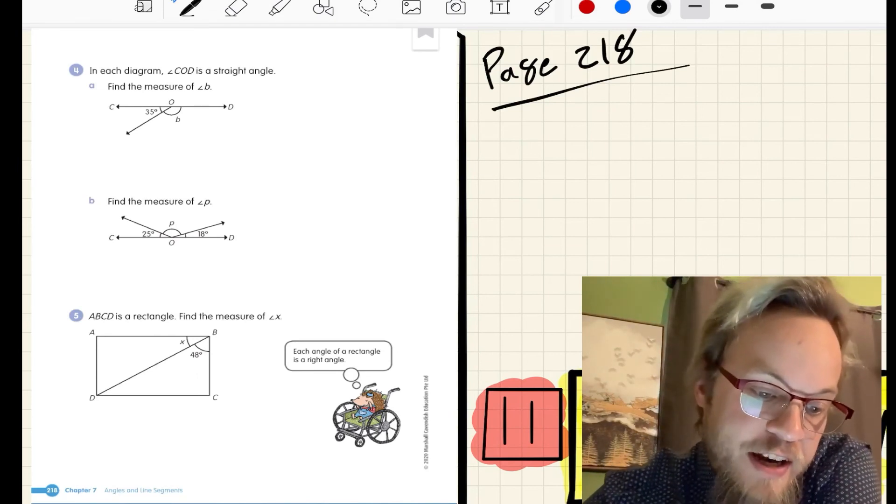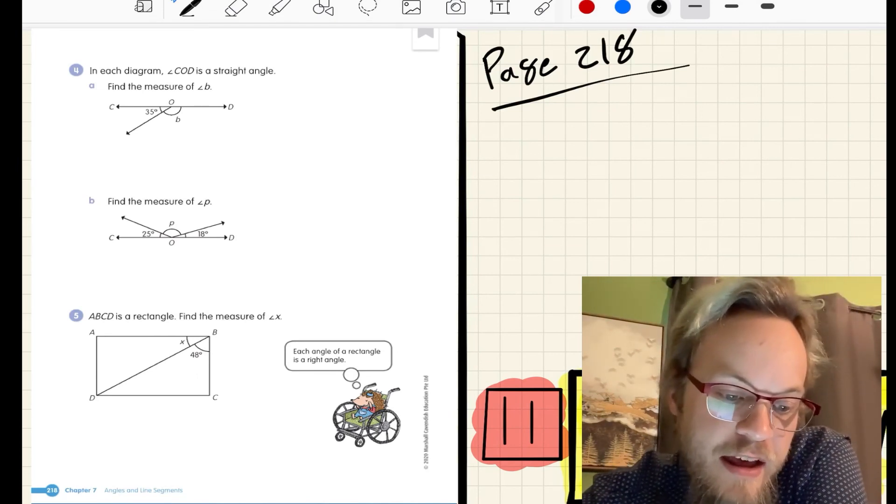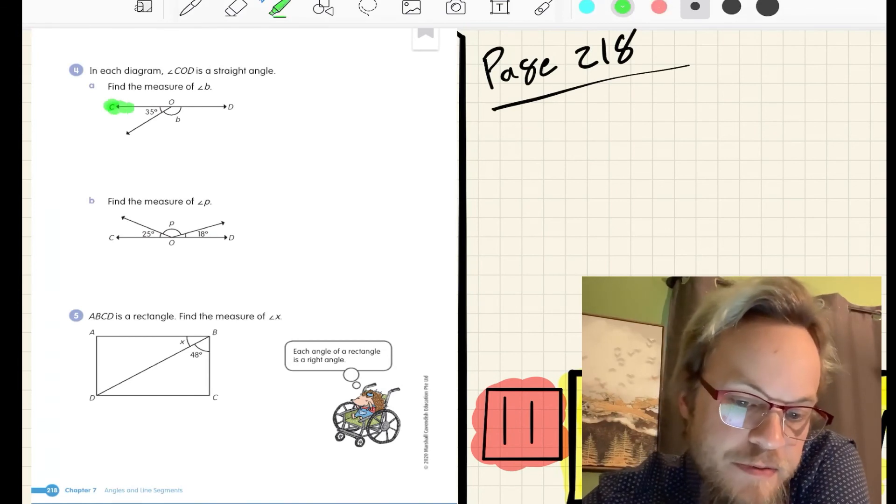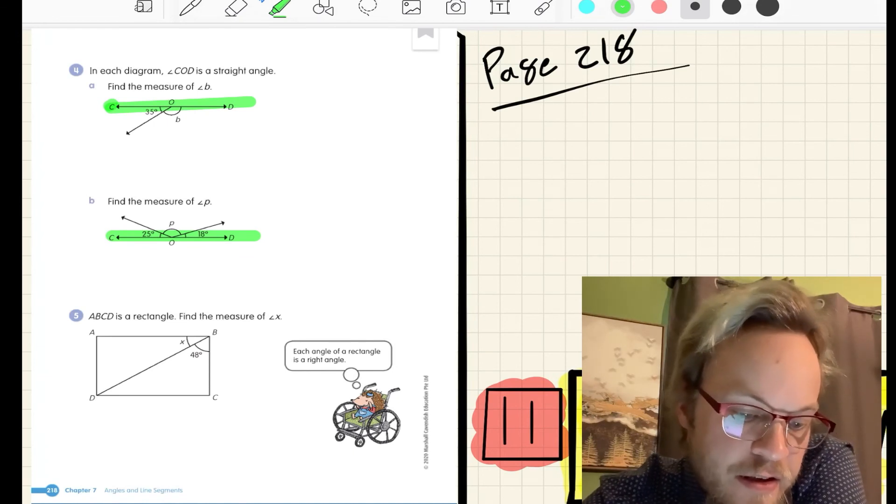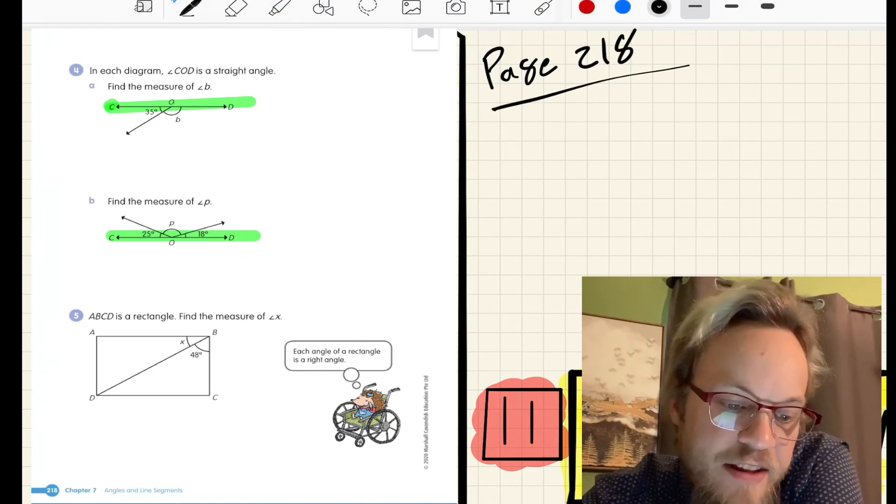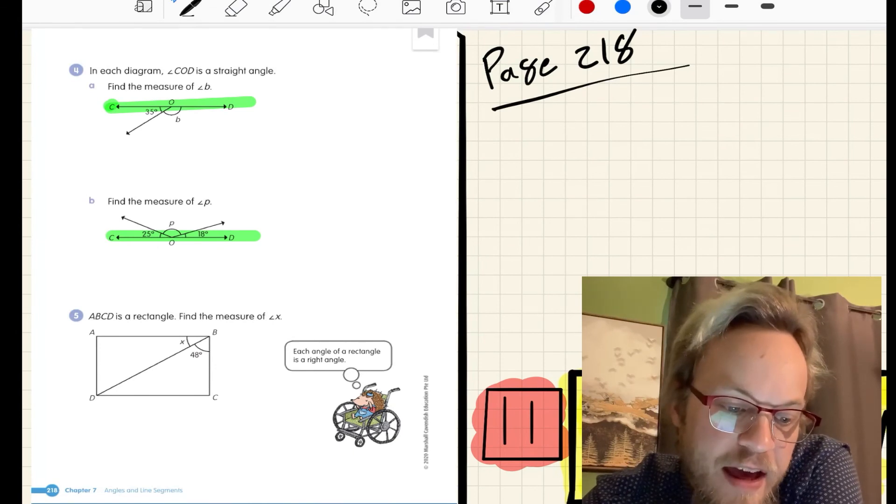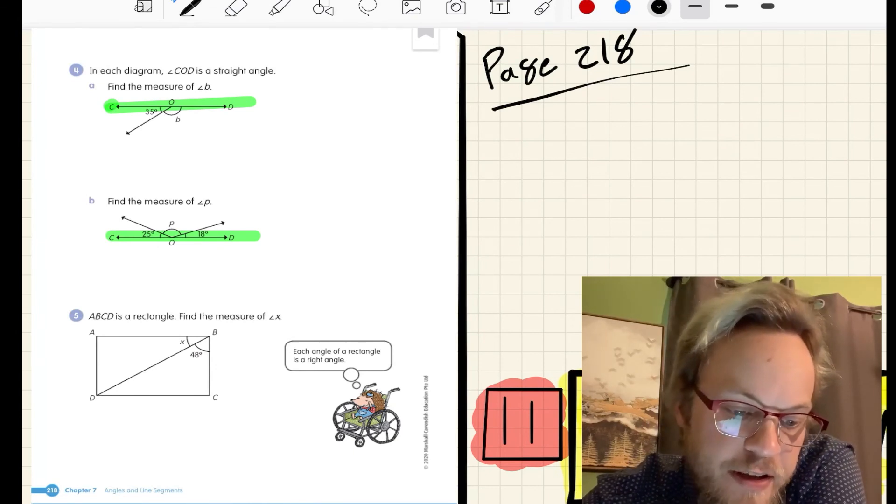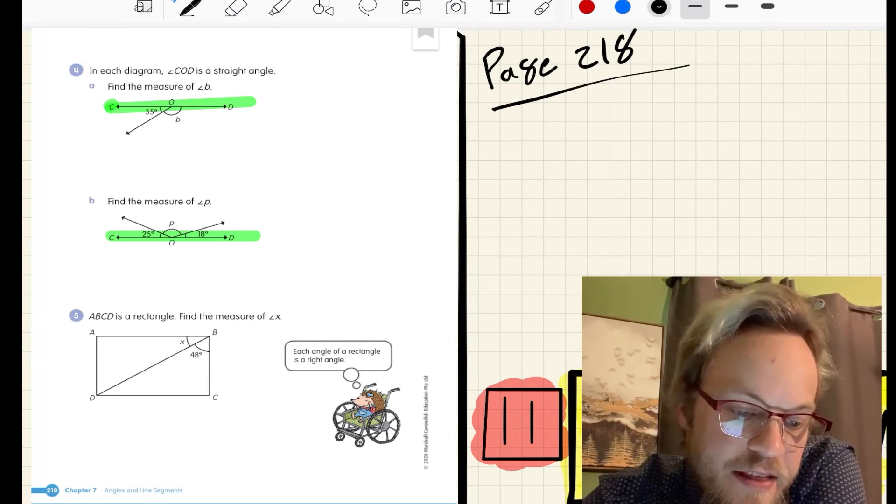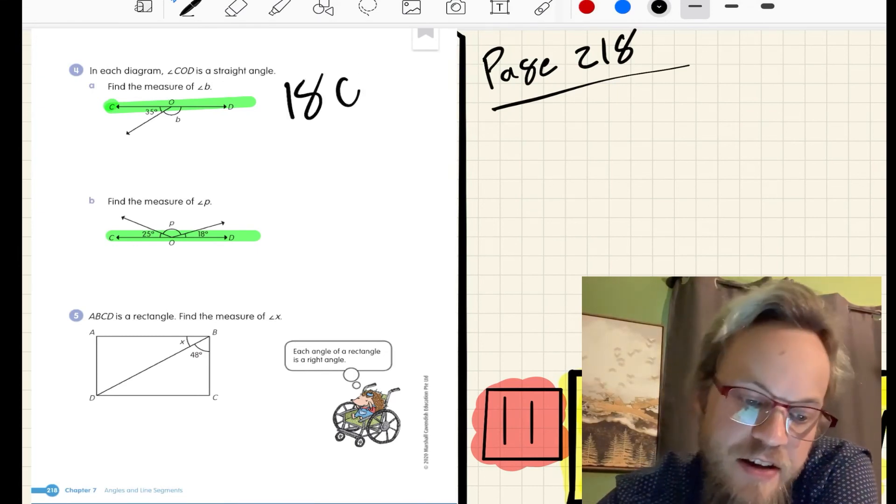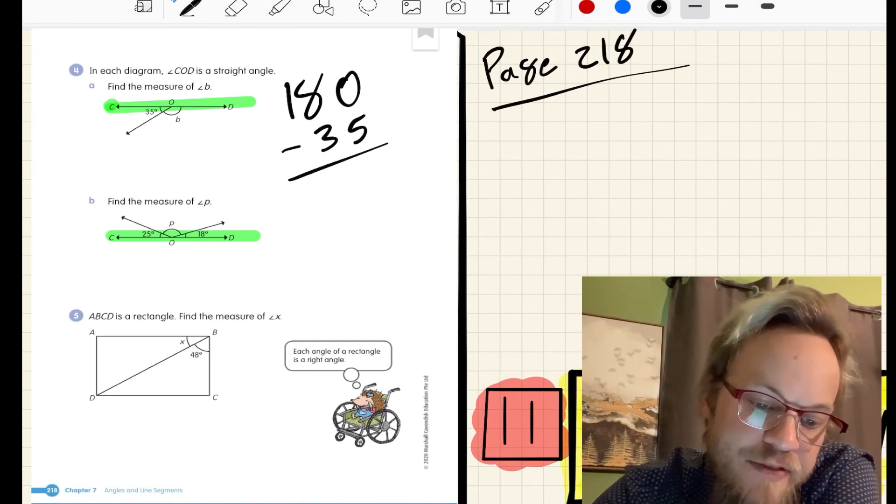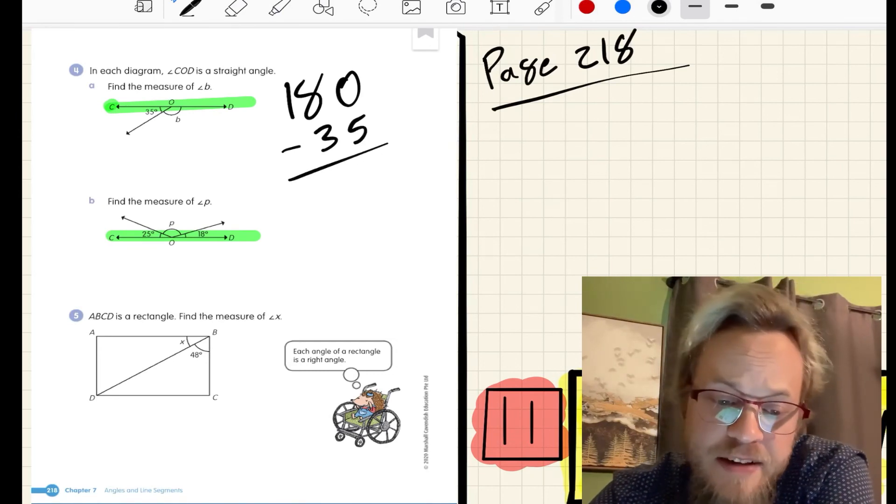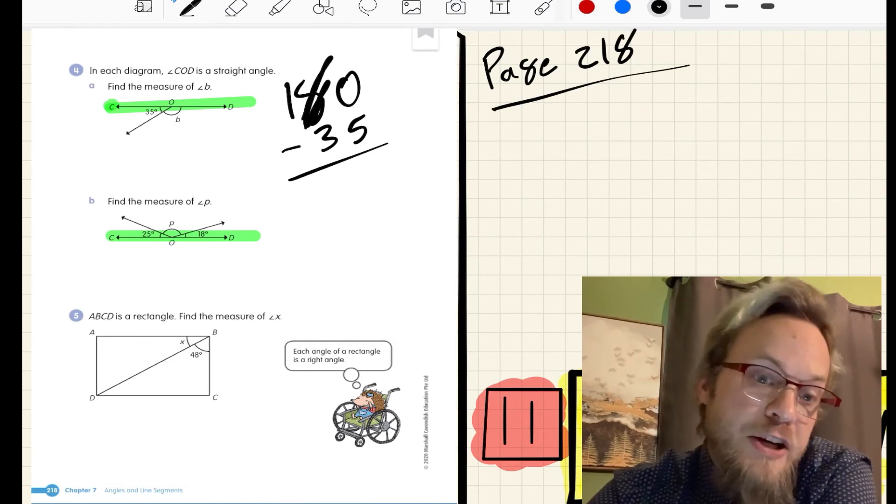Problem number four. In each diagram, the angle C-O-D is a straight angle. So we know that we're dealing with 180 degrees. And we need to find the missing measurements. Problem A has C-O-D and one angle is 35 degrees. Angle B is unknown. That will be 180 minus 35. I can't subtract 0 minus 5, so I must regroup.